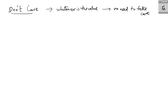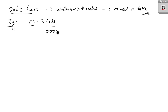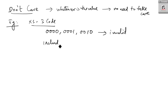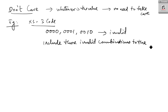If you need an example of this don't care combination, in the case of XS3 code, combinations like 0000, 0001, and 0010 are invalid. The way to include these invalid combinations in the Boolean expression is called don't care.